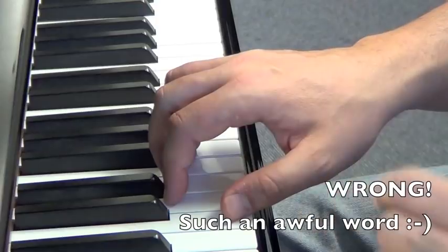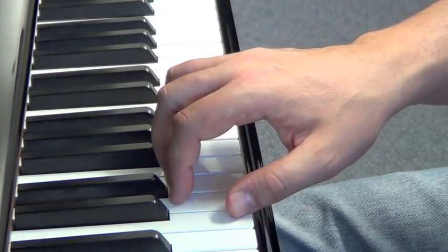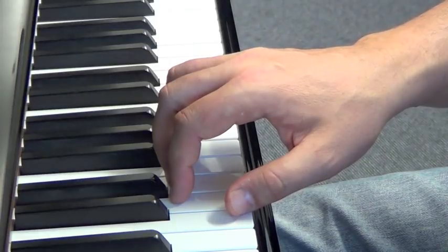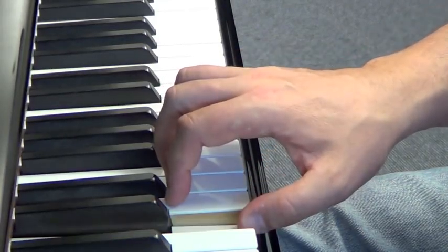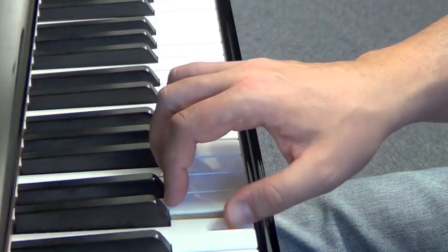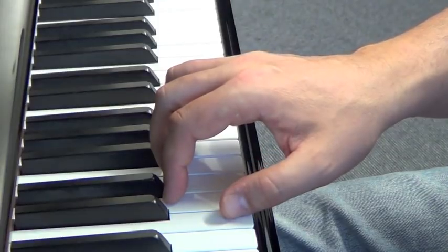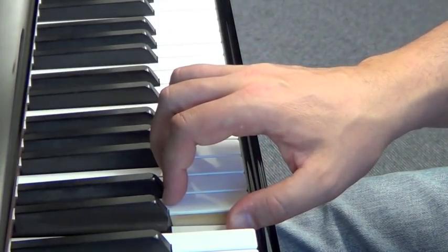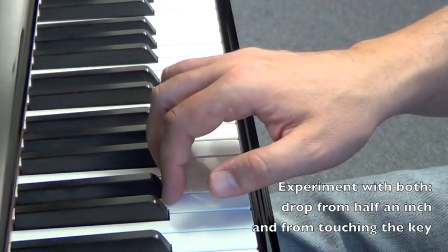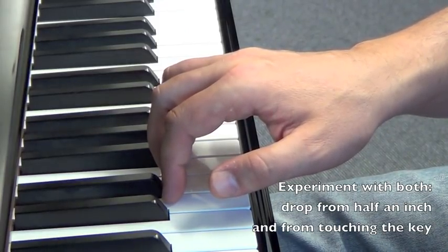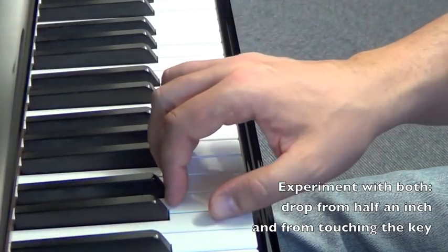It's quite easy to get it wrong and we want to establish good technique right from the start. So you want to play a C. Now remember what we said, drop your finger. If you want you can raise the finger a little bit like I did, or you can just drop it from touching. Remember the previous lesson, drop from half an inch, or you can just drop from barely touching.